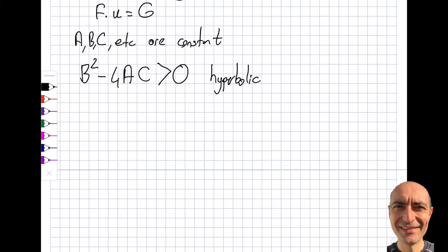You will see I will give an example of hyperbolic coming up soon. If this is equal to zero, I will call this parabolic. And if it is less than zero, I will call this elliptical.